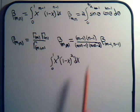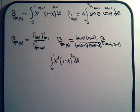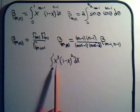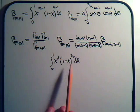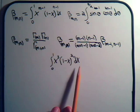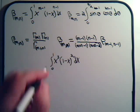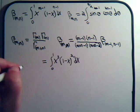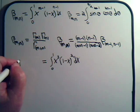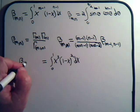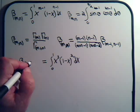Now we want to use these relationships to solve different types of integrals. We have an integral from 0 to 1 of x cubed times (1 minus x) squared dx. Looking at this, we can say this would be a beta function of 4, 3.